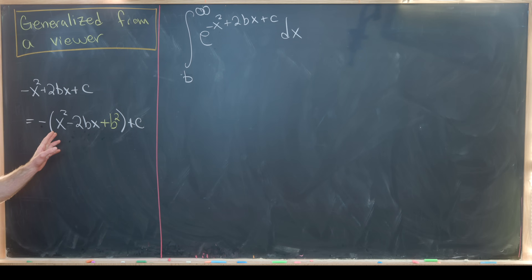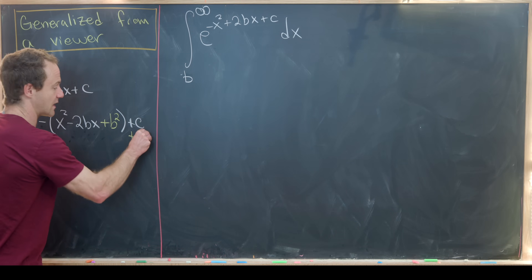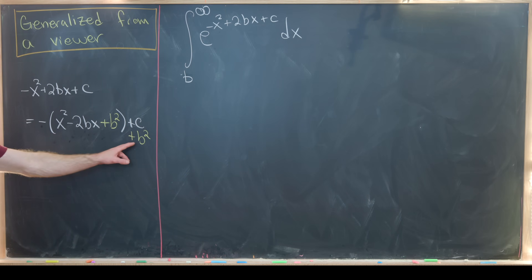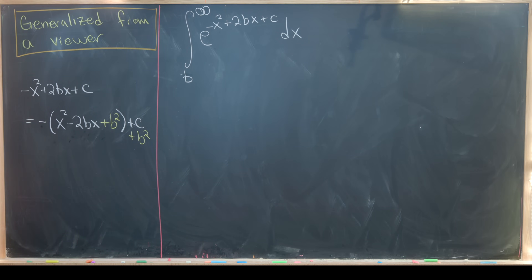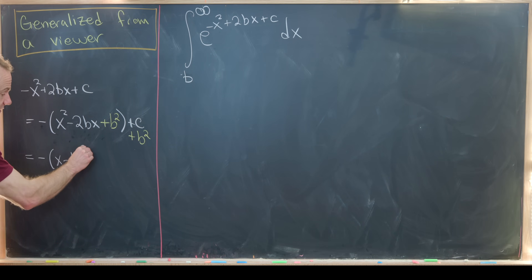So in order to fix this so we haven't added anything, we need to add b squared on the outside. Notice if I were to get rid of these parentheses, the b squared and the b squared would cancel because of this minus sign. Notice now we can take this thing that's in parentheses and factor it as x minus b quantity squared.